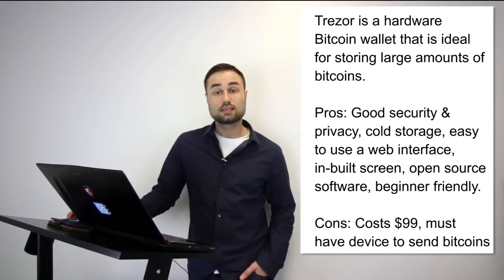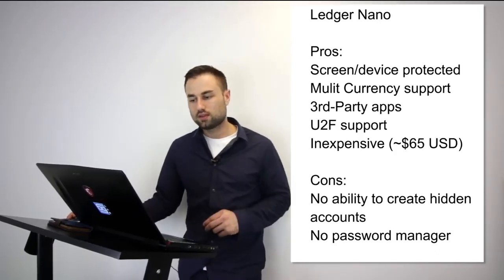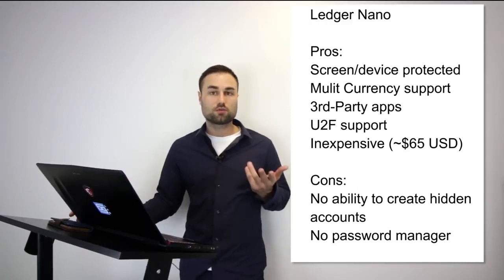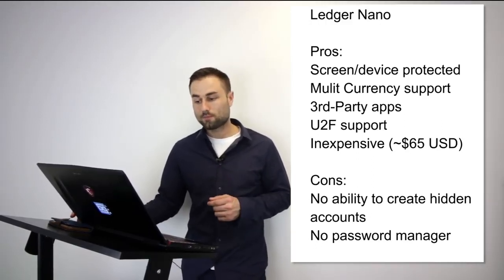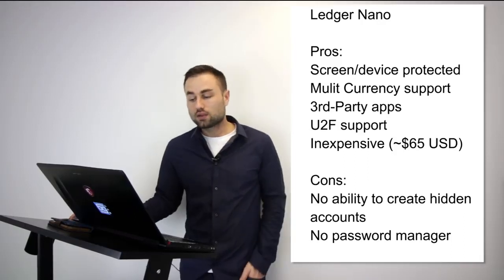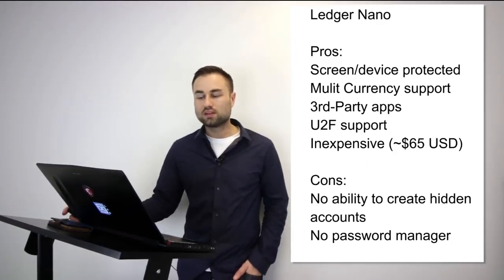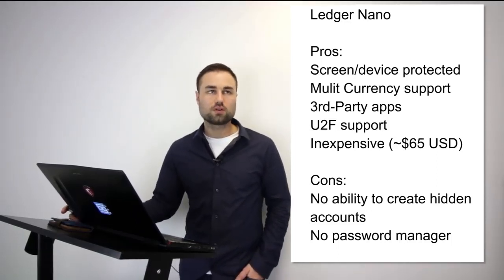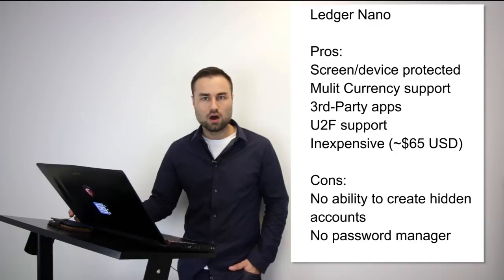The second hardware wallet is the Ledger Nano S, which I personally prefer — I'm biased, but I like the experience more. The technology between the Ledger and Trezor is pretty much the same, but I prefer the Ledger experience. It has an amazing feel, multi-currency support, third-party apps you can remove from the device, UTF support, and it's quite cheap — only about $65 USD compared to other hard wallets. The cons: not as advanced as other hard wallets, no ability to create hidden accounts, and no password manager.